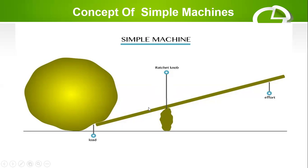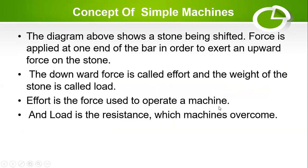According to the diagram we have seen, it shows a stone being lifted. The force is applied at one end of the bar in order to exert an upward force on the stone, while the downward force is what we call the effort, and the weight of the stone is what we call the load. The effort is the force that is used to operate a machine, while the load is the resistance which the machine overcomes.